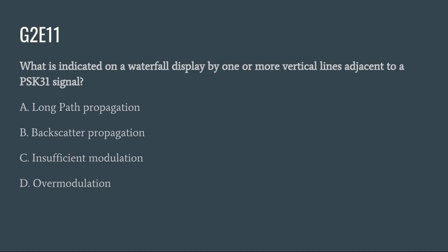G2E11: What is indicated on the waterfall display by one or more vertical lines adjacent to a PSK31 signal? A. Long path propagation. B. Back scatter propagation. C. Insufficient modulation. Or D. Over modulation. The correct answer is D: over modulation.